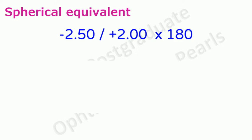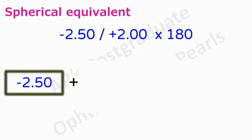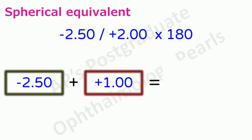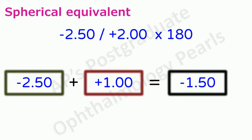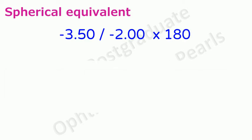Let's take another example. In this case to the sphere we add half of the cylinder that is plus 1 which gives us minus 2.5 plus 1 that is minus 1.5 diopters. This is the spherical equivalent for this correction.